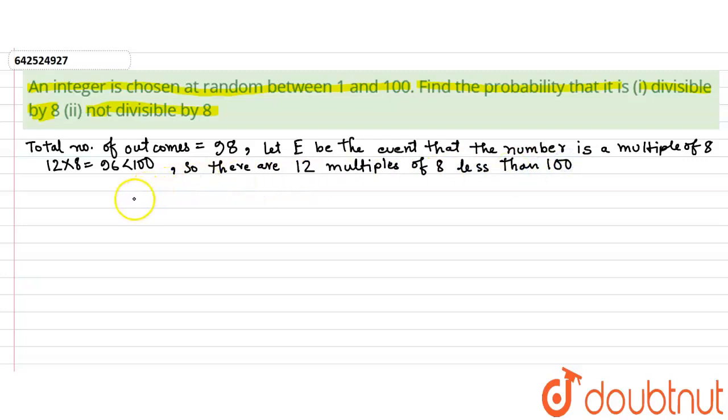So the required probability—therefore probability of event E equals 12 by 98, that is nothing but 6 by 49.